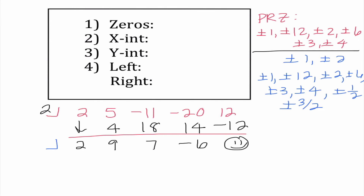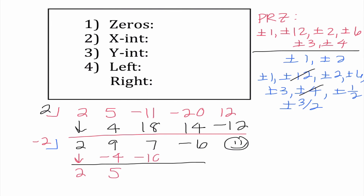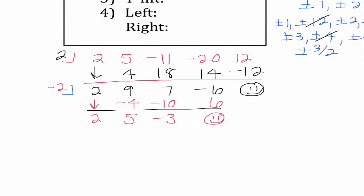I'm not down to x squared yet, and the reason why when we have x squared we stop is because we know quadratic methods. This is x cubed, and I notice now my new constant is negative 6. That actually cancels out a few things — it cancels out 12 and 4. I don't have to worry about those options anymore because they are not factors of 6. Let's try negative 2, which is a factor of 6.